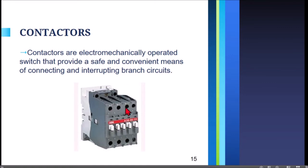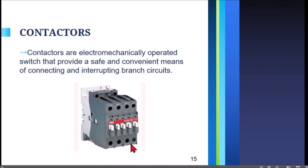This is a contactor — brand ABB. As you can see, we have terminals L1, L2, L3, which are the supply wire terminals, and T1, T2, T3 below, which are the terminals where the motor wires are connected. The supply wires connect to the L terminals and the motor terminals connect to the T terminals.